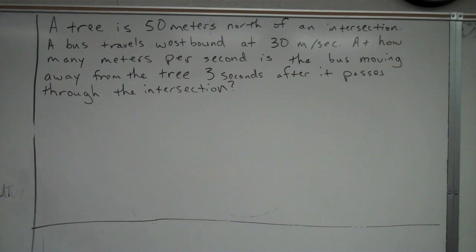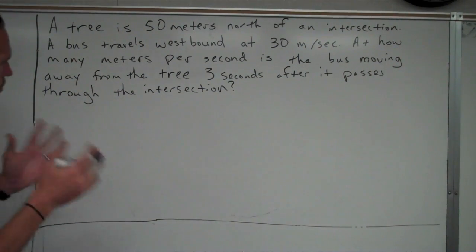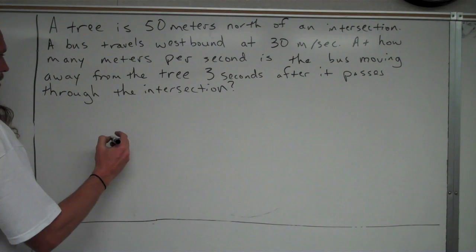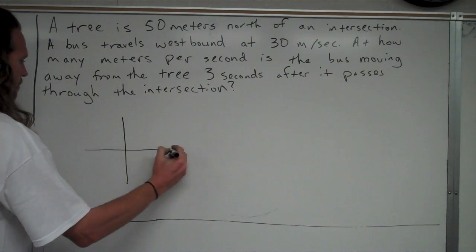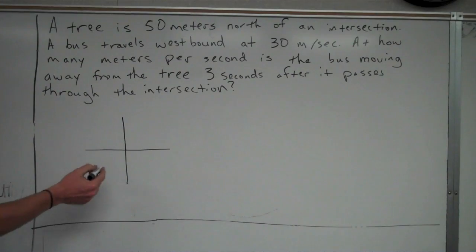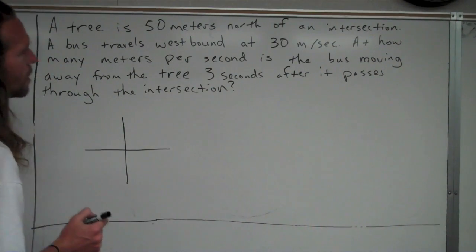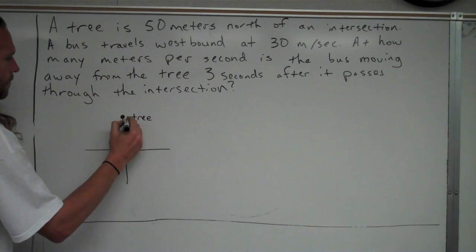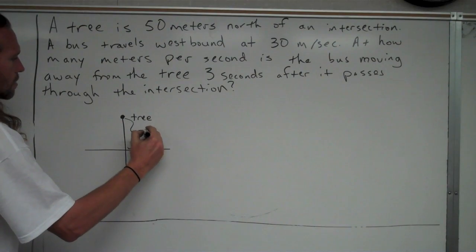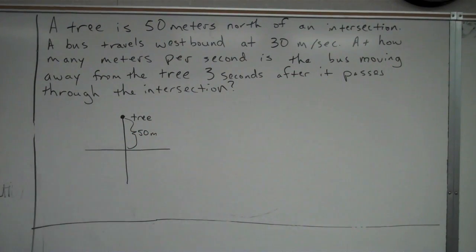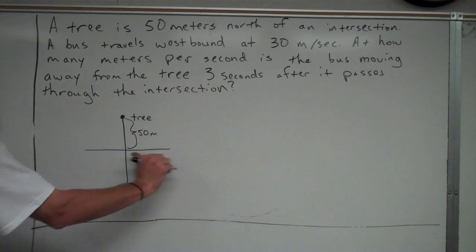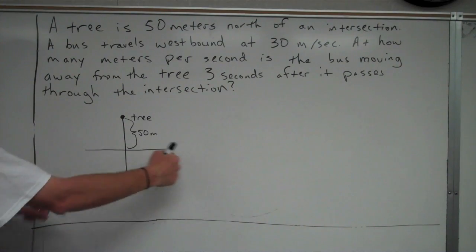Some of it could have been worded better, but in order to really get an idea of what's going on, the first thing you've got to do is draw a picture. We have an intersection — a road going one way, a road going another way. It says there's a tree 50 meters north of the intersection. And a bus is traveling westbound, meaning to the left, on the horizontal line at 30 meters per second.